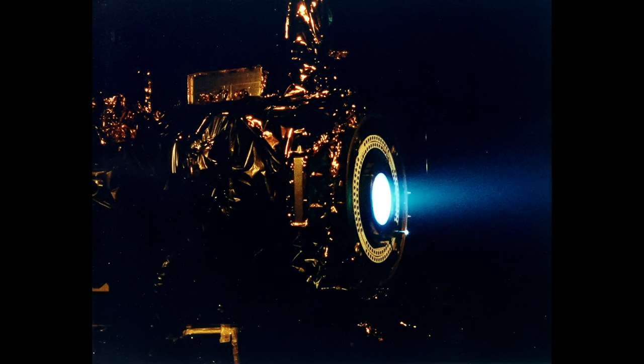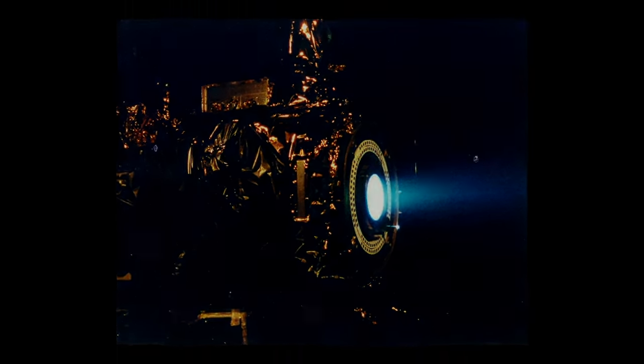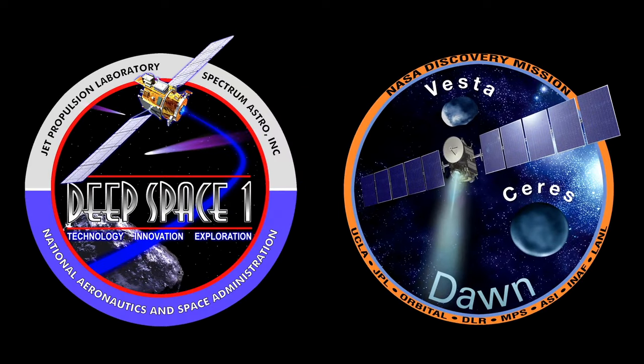Here, you see the thruster being tested at the Jet Propulsion Laboratory in Pasadena. This engine was used on both the Deep Space One and Dawn missions to fly by asteroids and comets. An ion engine is 10 times more efficient than a conventional propulsion unit.